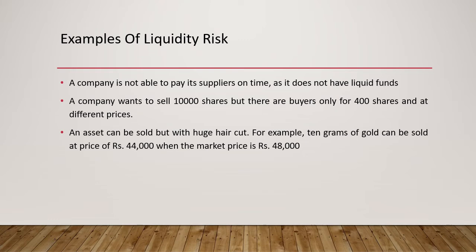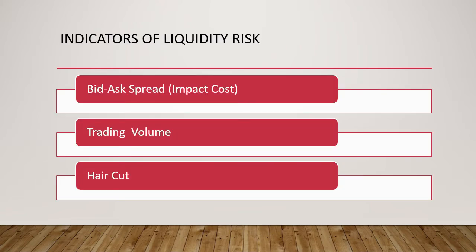The third example is that an asset can be sold with a huge haircut. For example, 10 grams of gold can be sold at a price of 44,000 when the market price is 48,000, which means when you are trying to dispose of this asset you take a huge cut. Moving forward, let me tell you what could be the indicators of liquidity risk or how we measure it. The first point is the bid-ask spread, or the difference between the best buy price and best sell price of an asset, which can also be measured with the help of impact cost. The next point is what kind of trading volumes we are seeing in the assets. That also indicates liquidity risk. The third indicator is haircut, which can give us some indication of an illiquidity issue with respect to a collateral or any other asset.